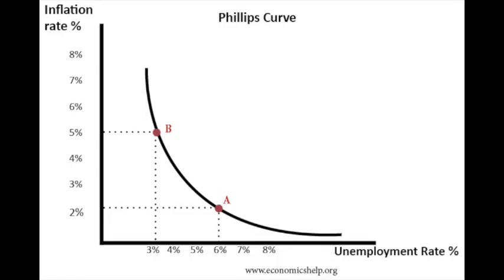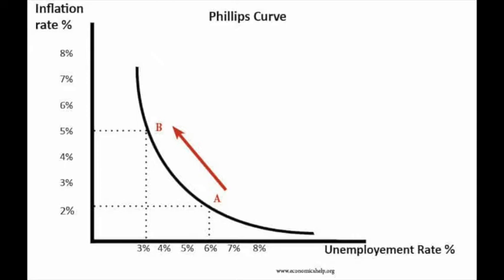We can see this on a graph where the y-axis is the inflation rate, the x-axis is the unemployment rate, and we create a curve line that allows us to see an inverse relationship — meaning that when inflation rises, unemployment goes down.